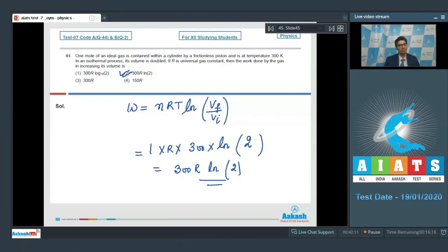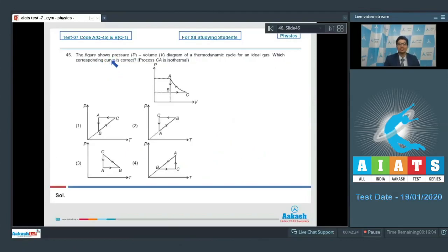Now let us proceed to question number 45. Question 45 says the figure shows pressure volume diagram for a thermodynamic cycle for an ideal gas which corresponding curve is correct. Process CA is isothermal.